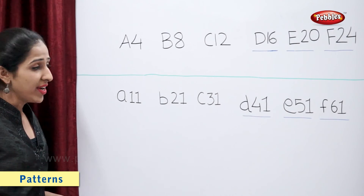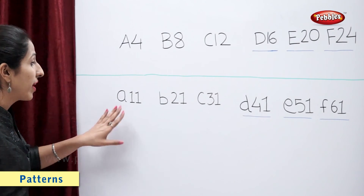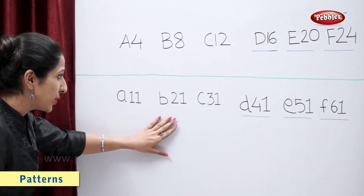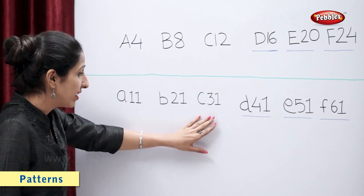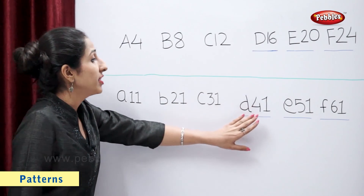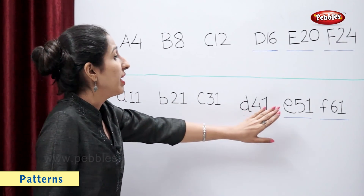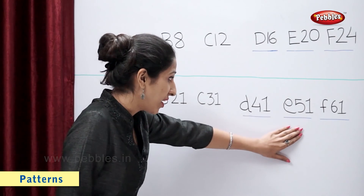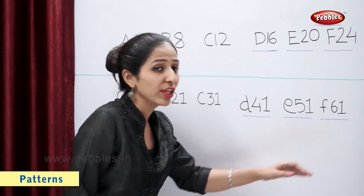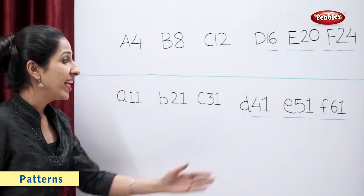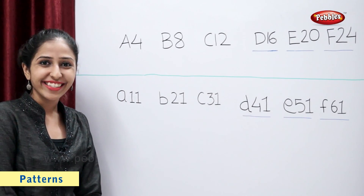So, A11, B21, C31, D41, E51, F61. So, this is a complete pattern.